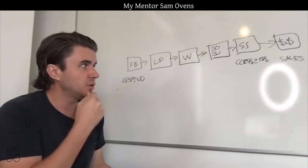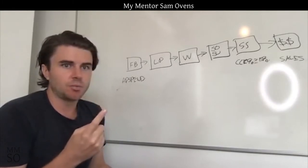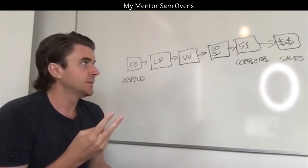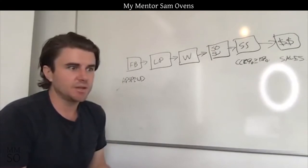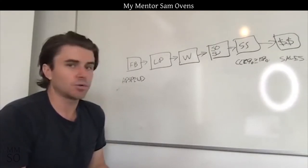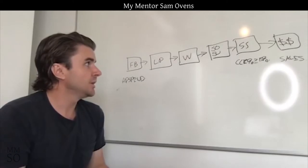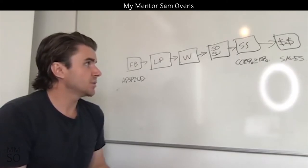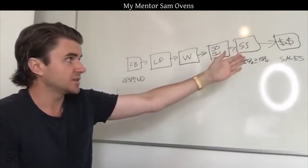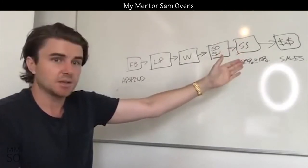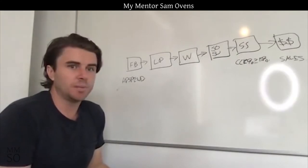That is why I tell most people that if you're using a sales call model and paid traffic, then you really need to have a higher ticket price. You really need to be selling something for $2,000 or above to make the economics of this system work. So if I check the price of their product and it's greater than or equal to $2,000, then we're good.